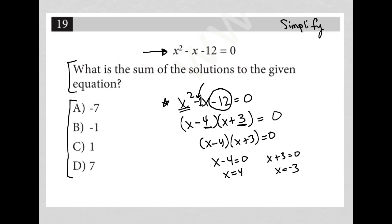And now, again, the question asks what is the sum of the solutions. So now I have to add 4 plus negative 3, which is positive 1. And therefore, my correct answer here is choice C.